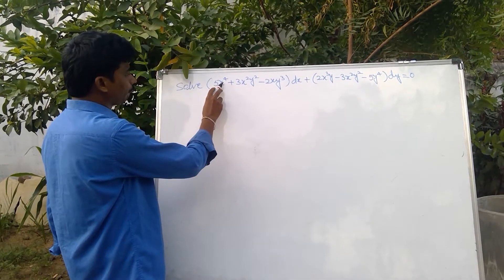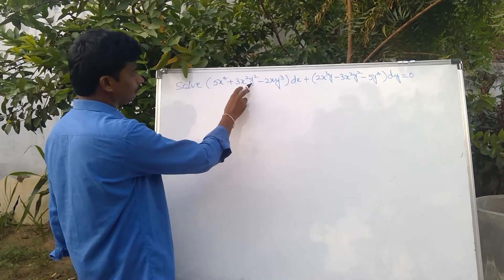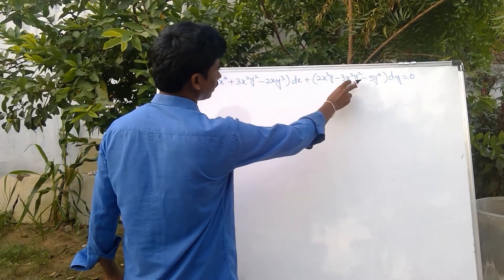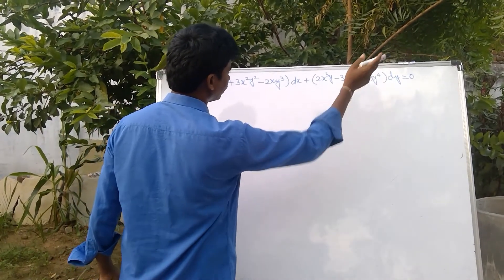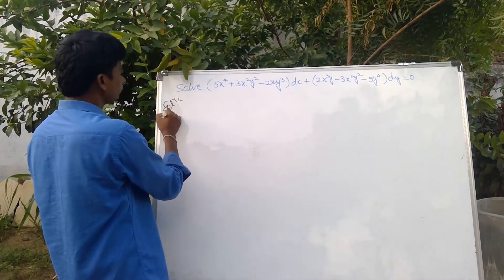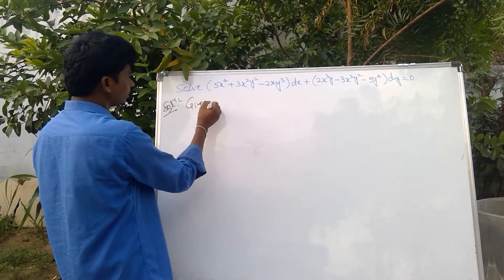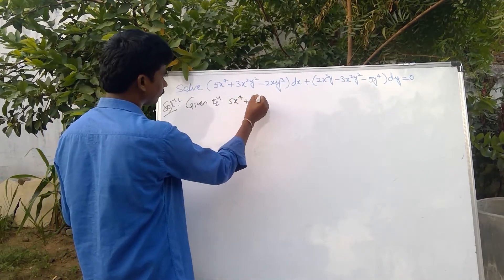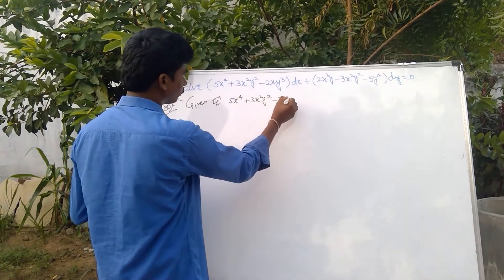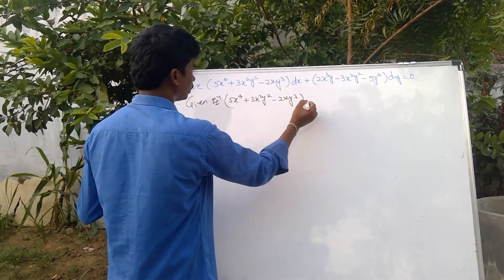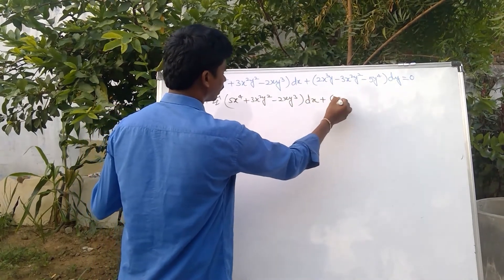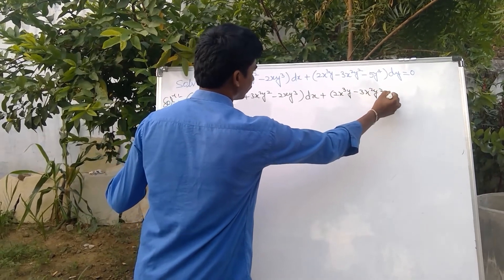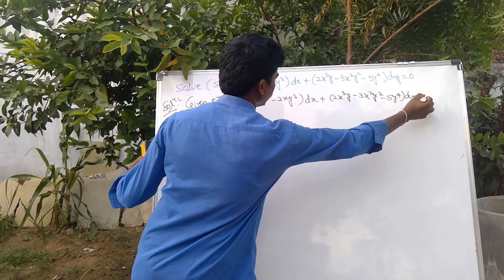Solve: (5x⁴ + 3x²y² − 2xy³)dx + (2x³y − 3x²y² − 5y⁴)dy = 0. See your solution. Given equation: 5x⁴ + 3x²y² − 2xy³ into dx, plus 2x³y − 3x²y² − 5y⁴ into dy, equal to 0. This is equation number 1.